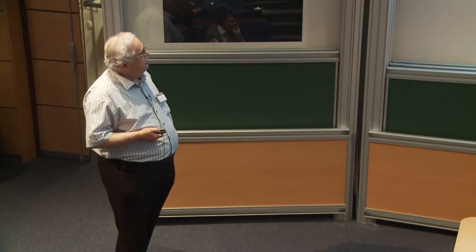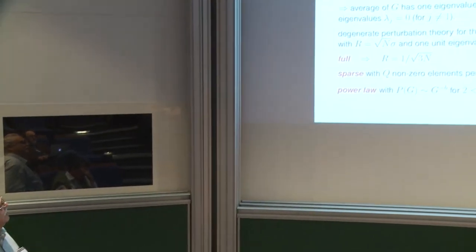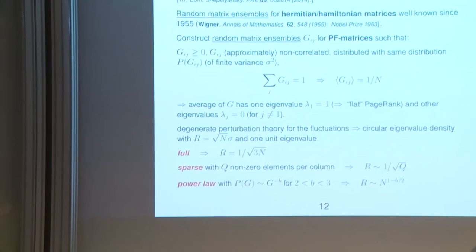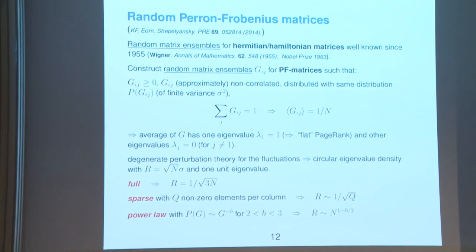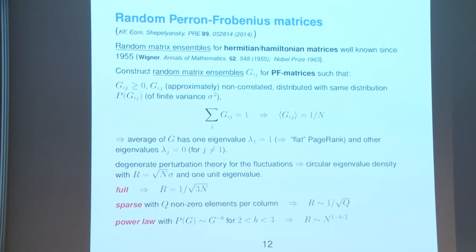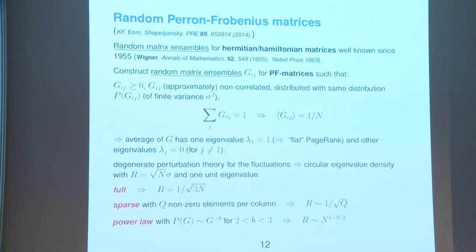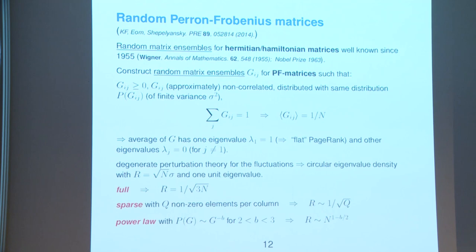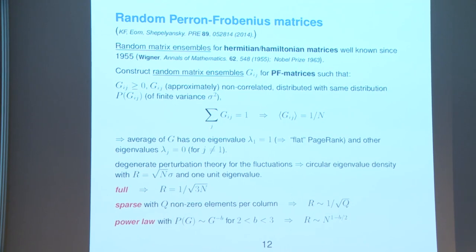We also studied random Perron-Frobenius matrix ensembles. Unlike classical Hermitian random matrix ensembles (Wigner, 1955), where level statistics are universal and apply to nuclear physics and quantum chaos, Perron-Frobenius matrices show no universality. The conditions for universality in the Hermitian case are quite easily satisfied, but the same is not true for our case.